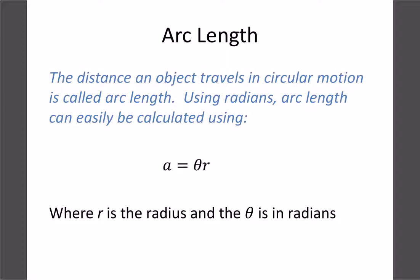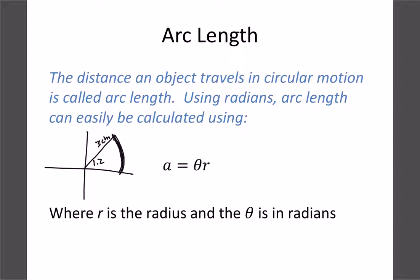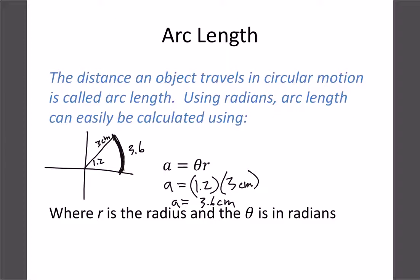Radians can also be used to calculate arc length — the distance traveled along a circular path. The key requirement is that the angle must be in radians. The formula is simply arc length = radius × angle (in radians). For example, with an angle of 1.2 radians and a radius of 3 centimeters, the arc length is 1.2 × 3 = 3.6 centimeters.